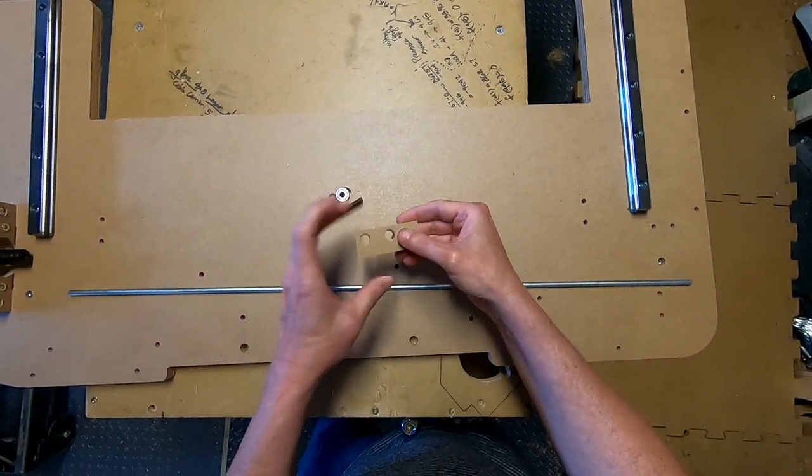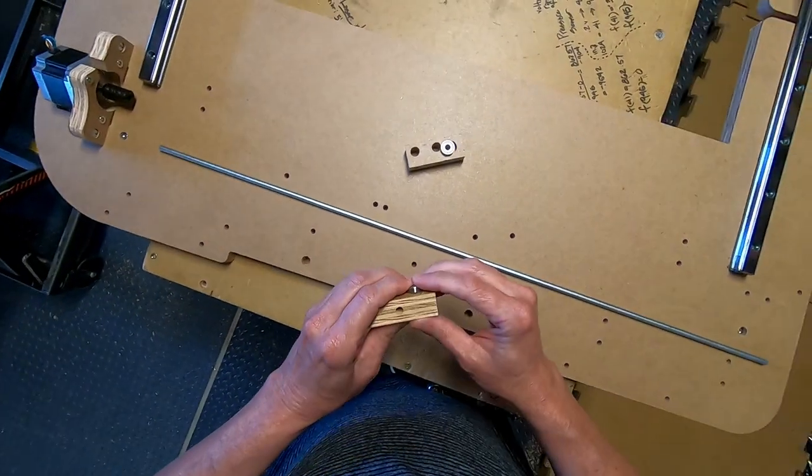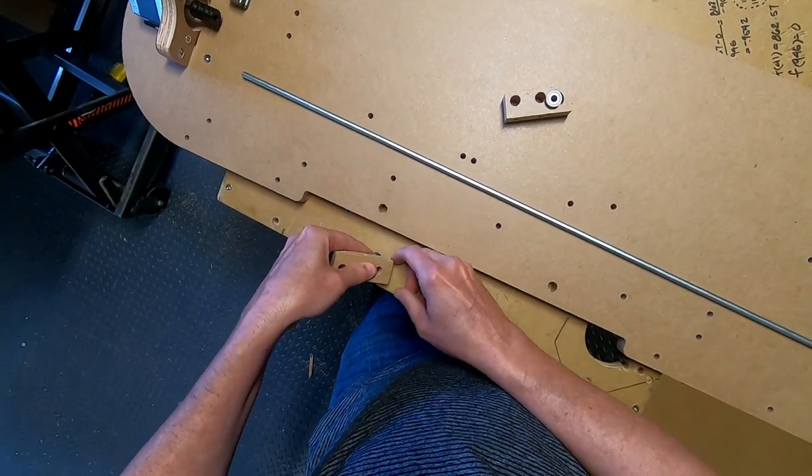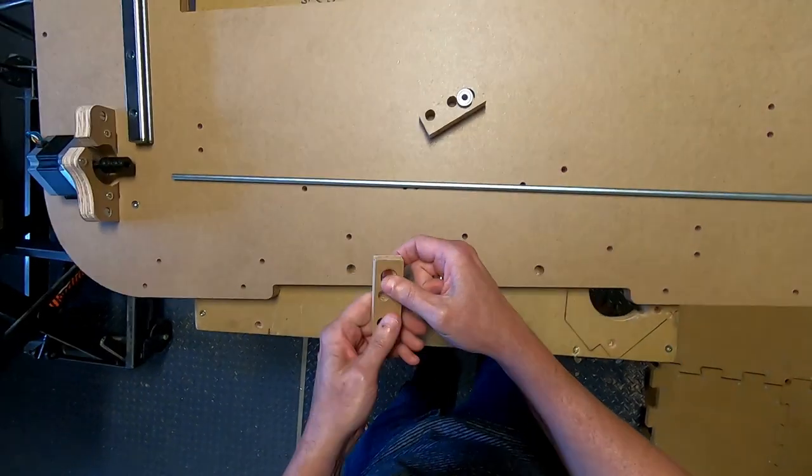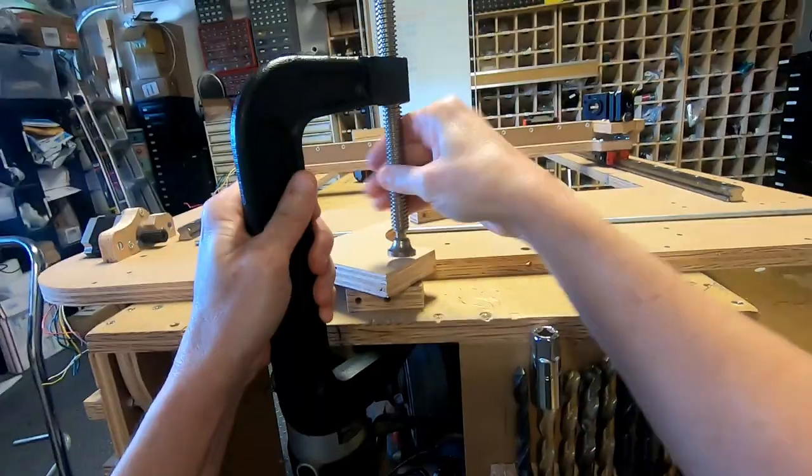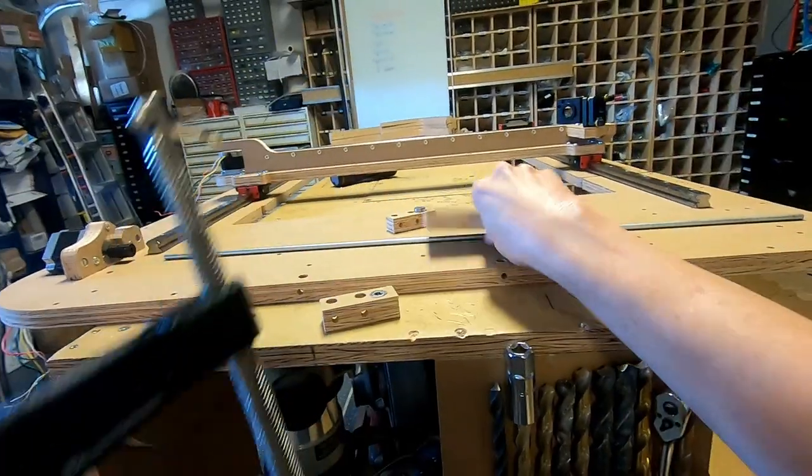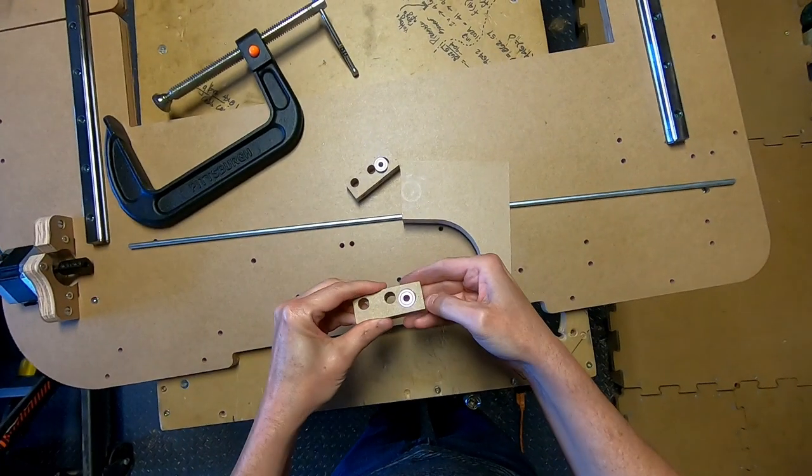First, I'm going to put the bearings into these bearing mounts. They are going to need to be pressed in, so I'm just going to use this table. If it's too difficult to do, you can use a clamp as well. This bearing is seated really well.